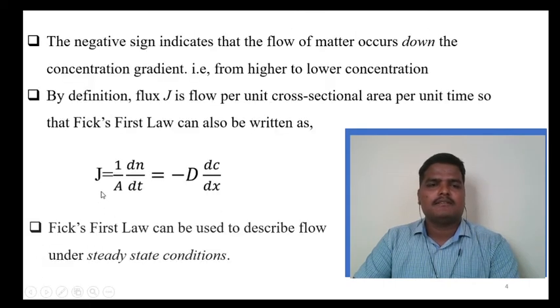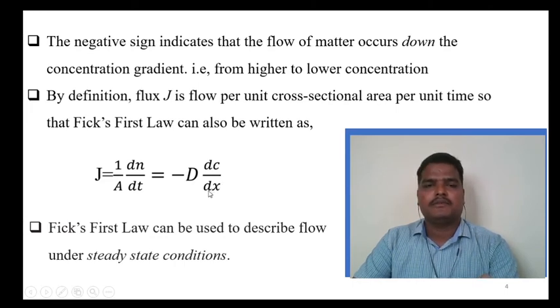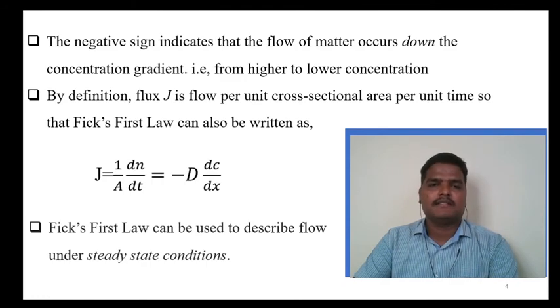We have this formula: J equals minus d dC/dx. d is given, dC—the difference in concentration—is also given, that is 10 kg per meter cube. And dx, the length traveled by the hydrogen atoms, is given.